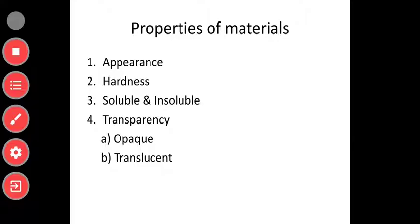Soluble and insoluble — some things can get dissolved. For transparency, if you add a cup of tea it is not transparent. If you have glass then you can see through it, but if we put a book on top we cannot see through it. On this basis we can see two divisions: opaque and translucent.